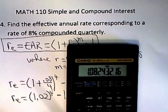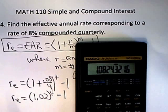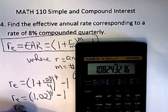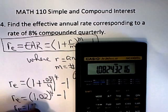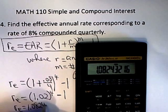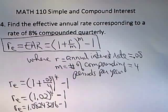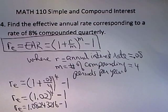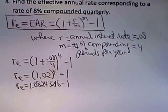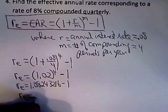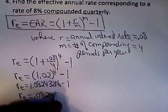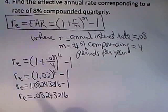And when you've done all that, you can see that the effective annual rate is 1.08243216 minus 1. Which, of course, is .08243216.